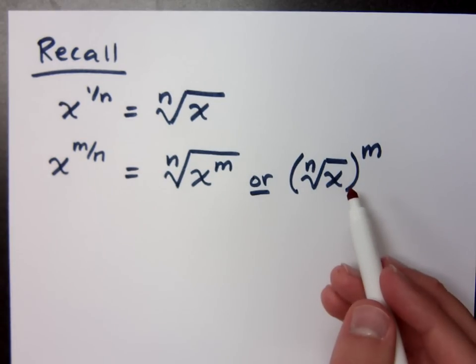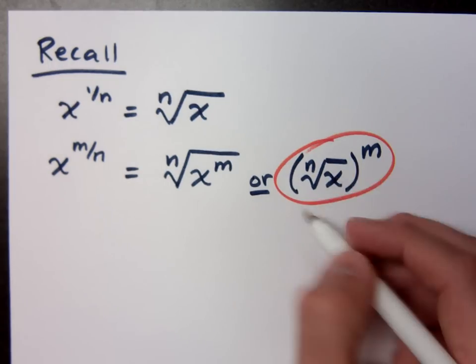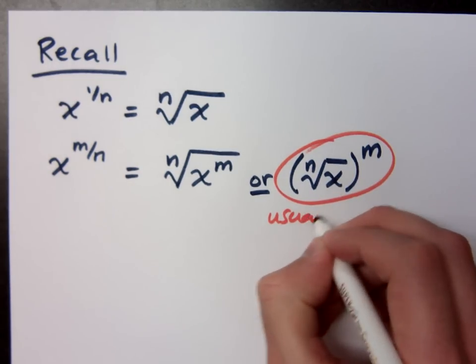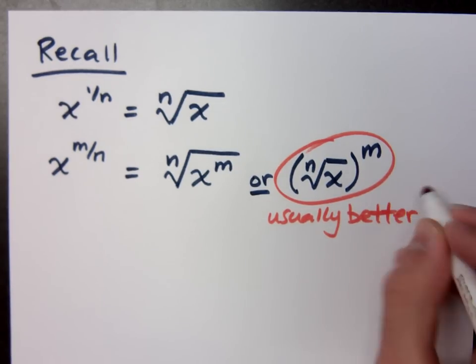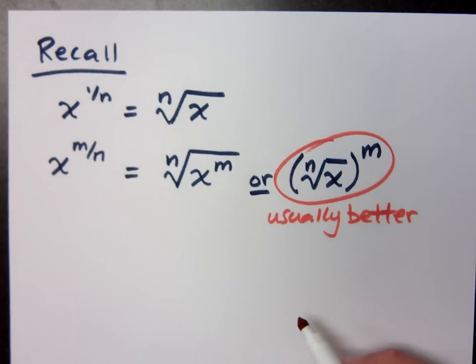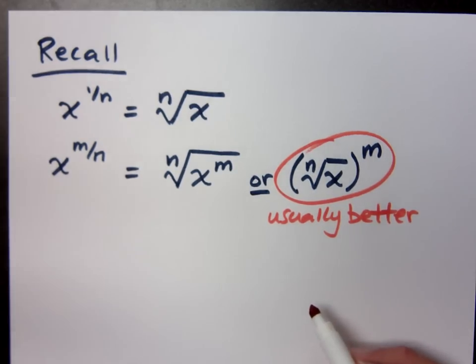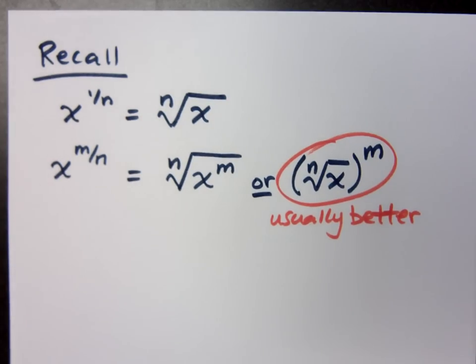Either way, it's going to be the same, but what you need to understand is that this guy is usually the better option. Do the radical first before you apply the power, because most times, not all the time, but most times when you apply a power, the numbers get bigger. So don't make something bigger just to make it smaller. Go small before you go big.